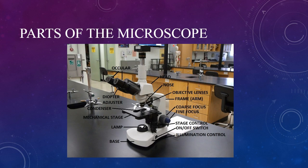The frame, or arm, holds the mechanical stage and the coarse and fine focus. The base is the bottom section of the microscope and houses the electronics, the on-off switch, the illumination control, and the lamp.